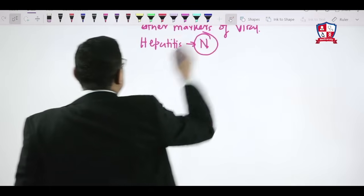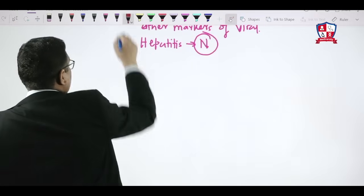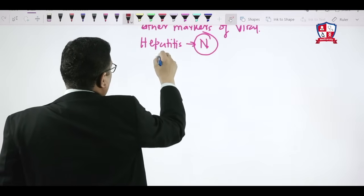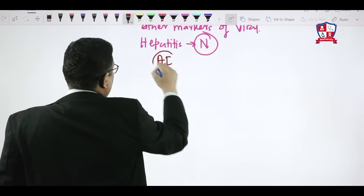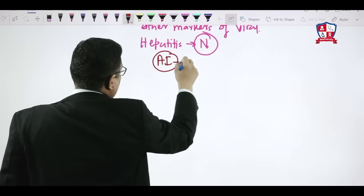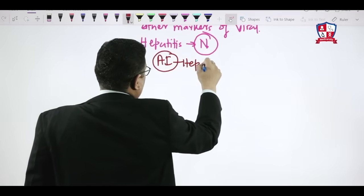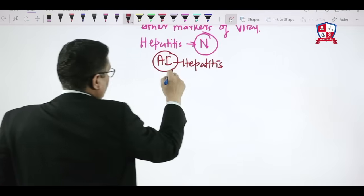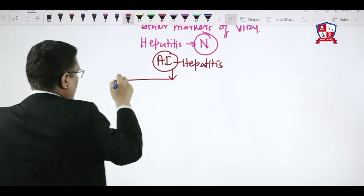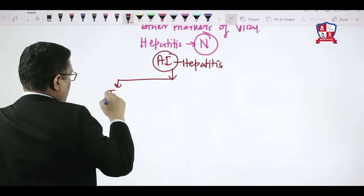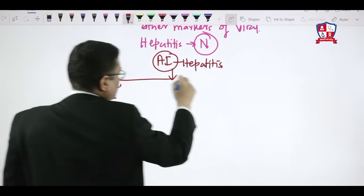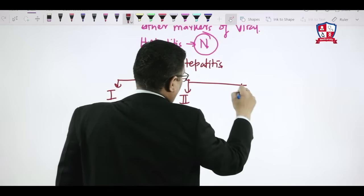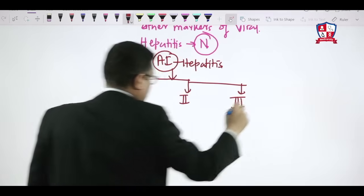In autoimmune hepatitis, on the basis of serological examination, there are three types: type 1, type 2, and type 3 autoimmune hepatitis, classified based on antibodies.